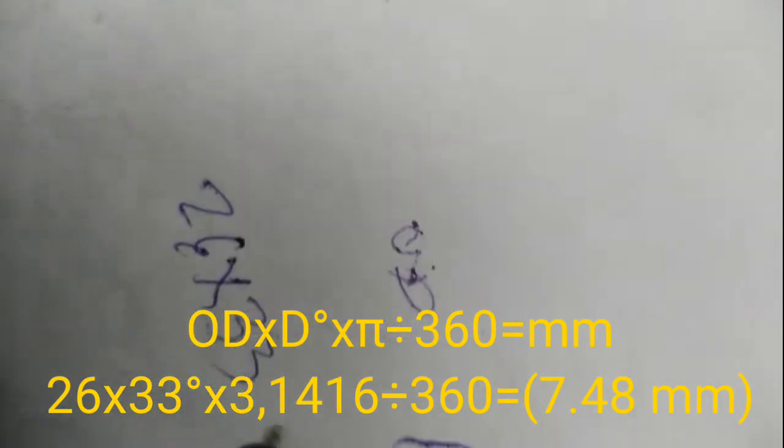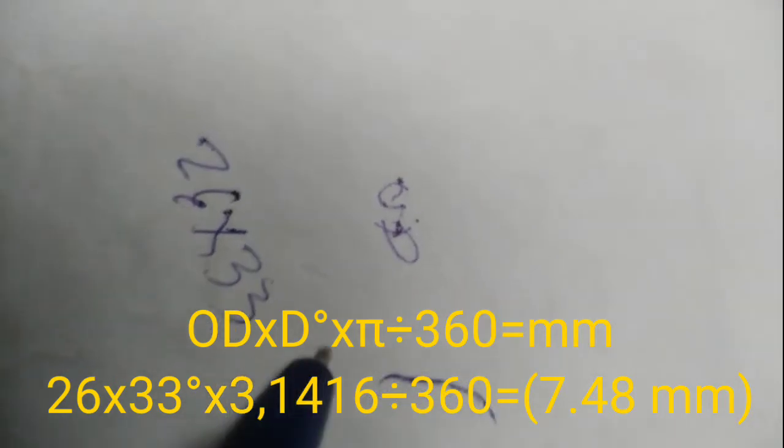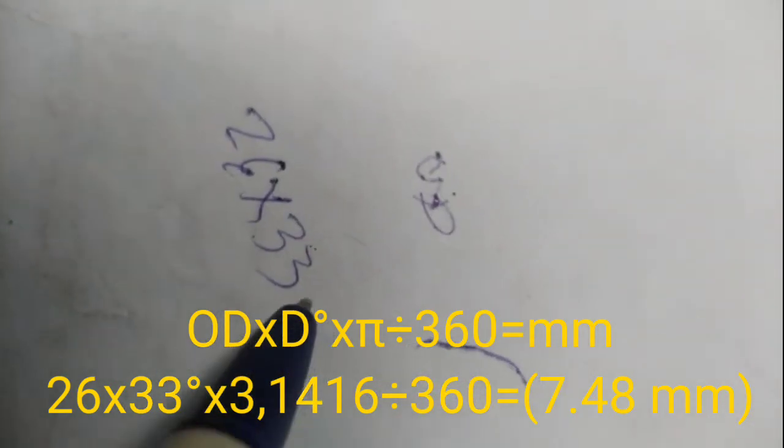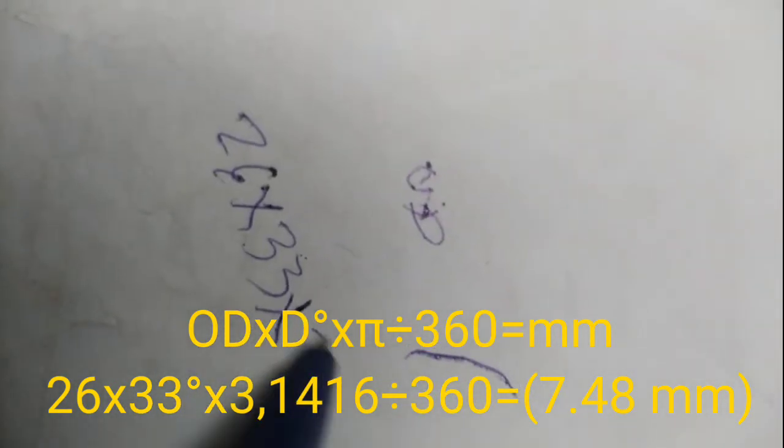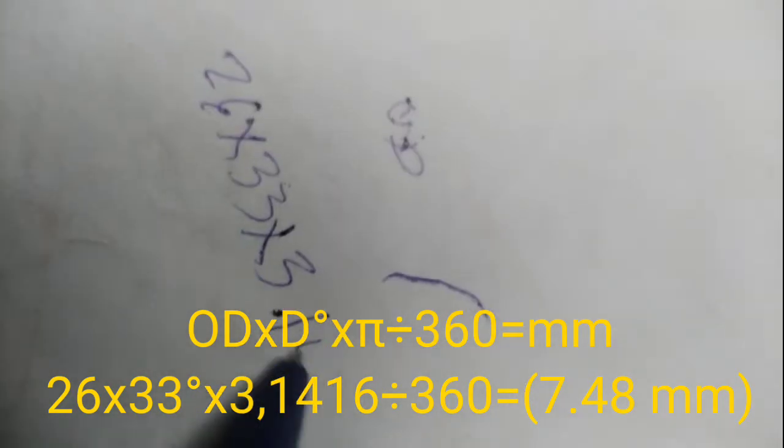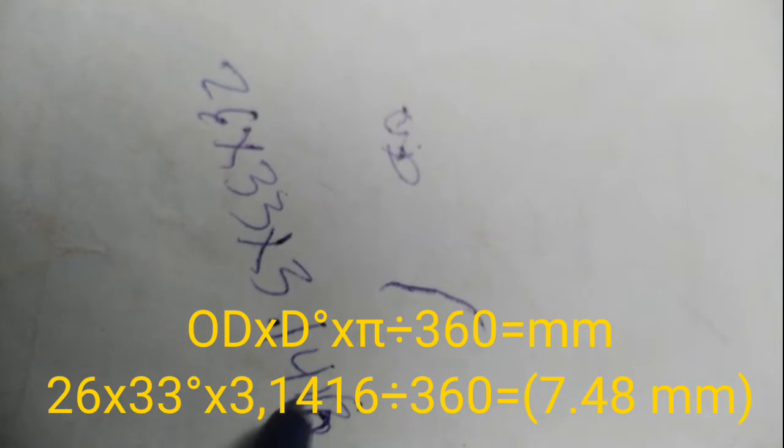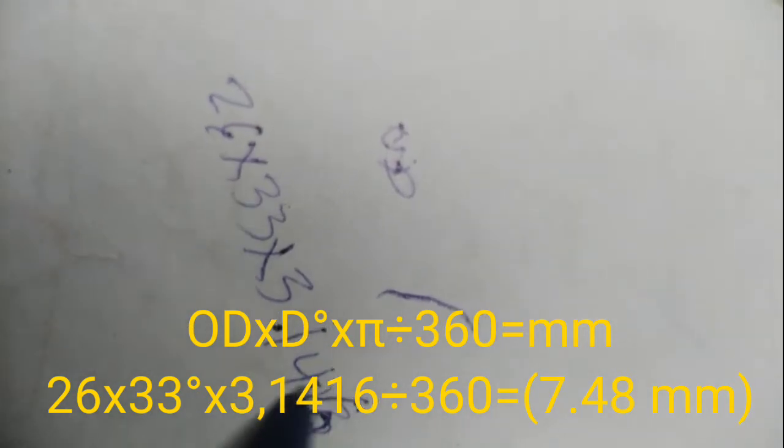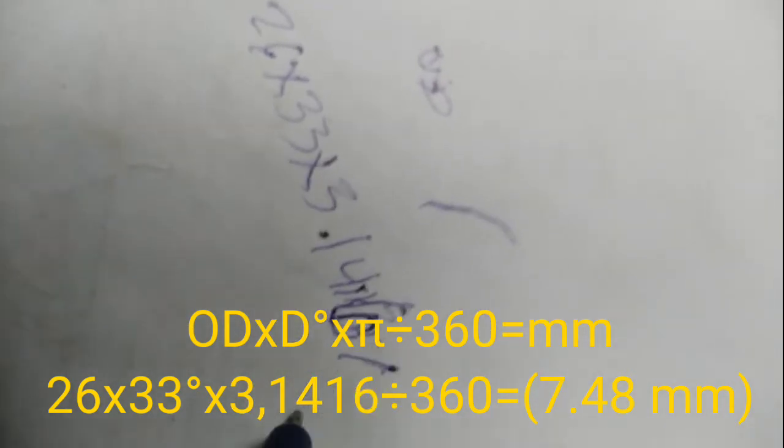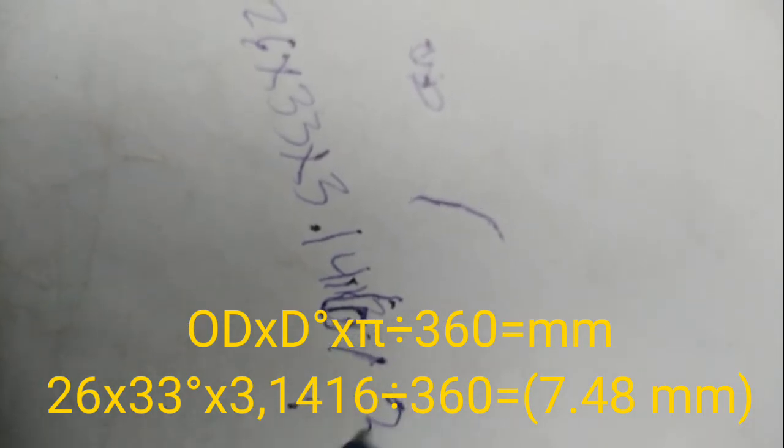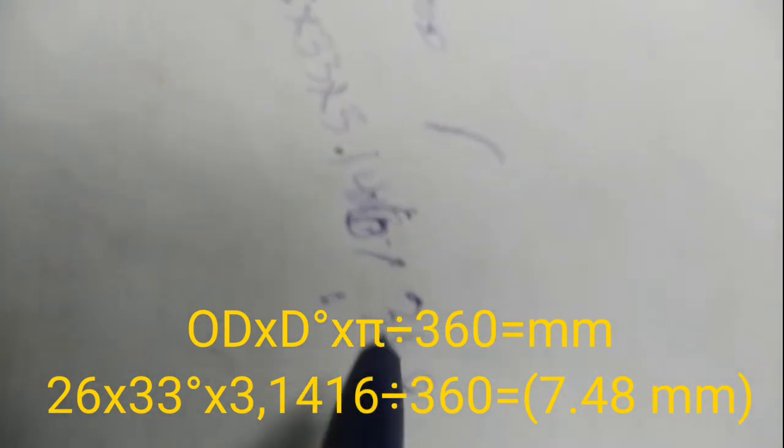The degree is 33, the opposite of 57. Then times pi. Okay, 3.1416. Okay, so that is the pi. And then divide into 360. Okay.